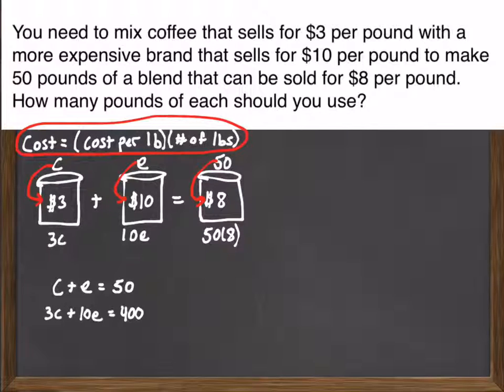Once we have our system of equations, it's fairly straightforward now. And I encourage you again on your own to try and solve the system. I'm going to choose to solve by substitution. So I take and solve the top equation for C. I get C equals 50 minus E. And then substitute that into the other equation. I get 3 times 50 minus E plus 10E equals 400. And then proceed to solve that equation.